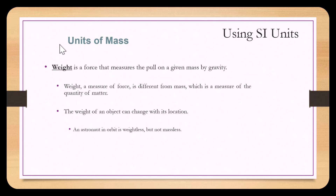Weight is a force that measures the pull on a given mass by gravity. Weight, a measure of force, is different from mass, which is a measure of the quantity of matter. The weight of an object can change with its location. An astronaut in orbit is weightless, but an astronaut is not massless.